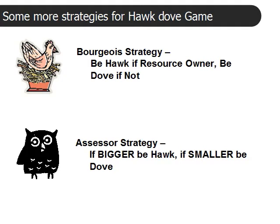A bourgeois strategy exists in contests where we have a non-shareable resource. You are either an owner or not an owner, and both parties recognize the status of ownership. The bourgeois strategy is to be a hawk — to fight — if you are an owner, but to be a dove if you are not.